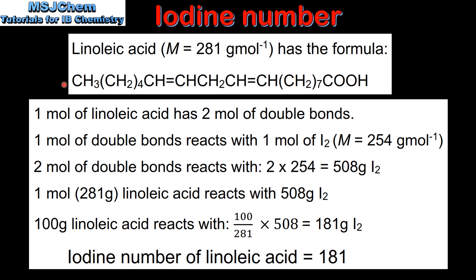From this equation we can see that one mole of linoleic acid has two moles of double bonds. The double bonds can be seen here and here. From the previous slide we know that one mole of double bonds reacts with one mole of iodine, which has a molar mass of 254 grams per mole. Therefore two moles of double bonds reacts with two times 254, which is 508 grams of iodine. Because linoleic acid has two moles of double bonds, one mole or 281 grams of linoleic acid reacts with 508 grams of iodine.